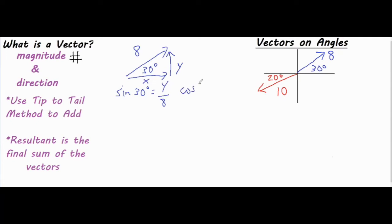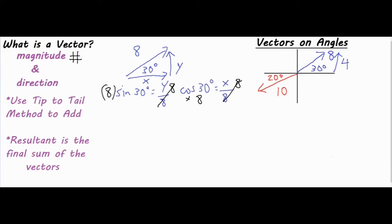For the x component, I use cosine: cosine of 30 degrees equals the adjacent side, x, over the hypotenuse eight. To solve for both, I multiply both sides by eight. Eight times sine of 30 gives us y equals four. Eight times cosine of 30 gives us x equals approximately 6.93.